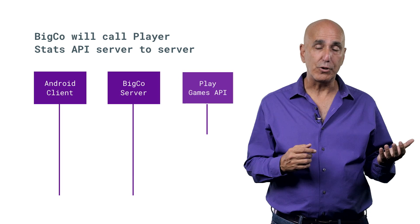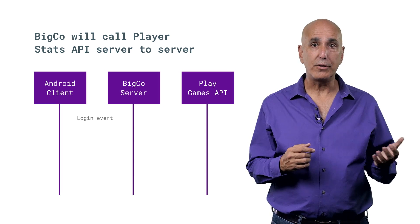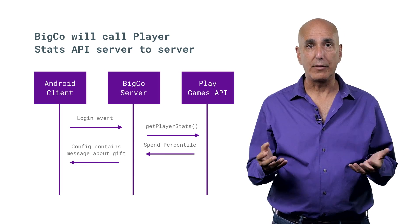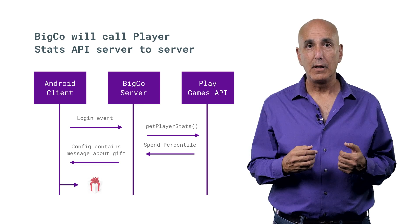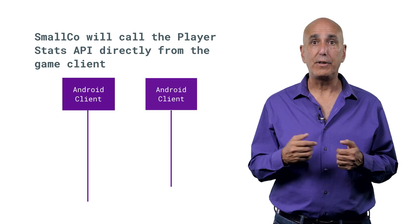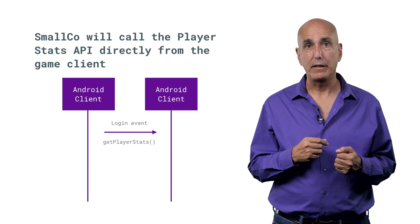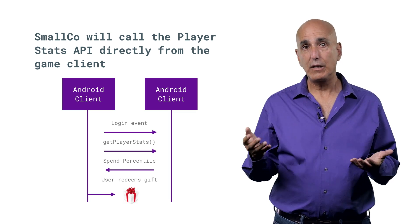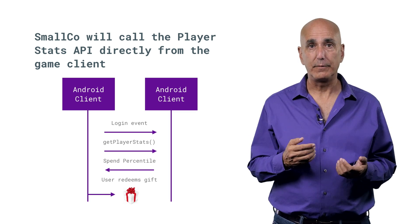Big companies who are managing many games will have different needs than individuals or small start-ups, and the API takes that into account. A large company with their own infrastructure can call the stats server-to-server, handling communications with the game clients on their own. A smaller company, though, can call the API directly from their game client, and then later if their needs grow to justify it, they can switch over to a server-to-server model.